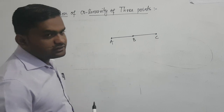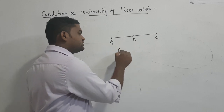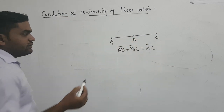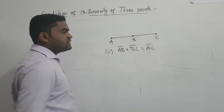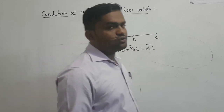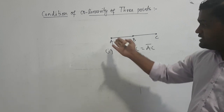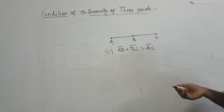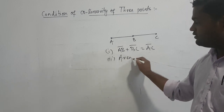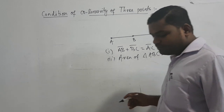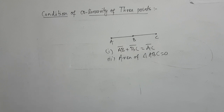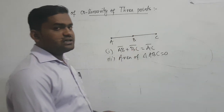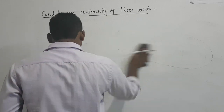Three points are collinear when they lie along a single straight line. The condition is: AB distance plus BC distance equals AC distance. Alternatively, if points A, B, C are collinear, the area of triangle ABC must equal zero, since no triangle is formed.